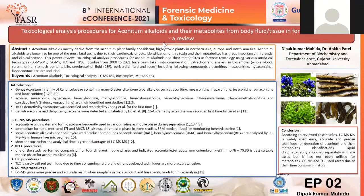Good afternoon to everyone. Here I am presenting a review on a toxicological analysis procedure for aconitum alkaloids and their metabolites from body fluid or tissue in forensic toxicology. Aconitum alkaloids are mostly derived from the aconitum plant family, which is considered one of the most toxic plants due to cardiotoxic effects. Many published works indicate the detection and identification of aconitum alkaloids, and here we present a review of those papers. Case studies published during the years 2000 to 2021 have been taken into consideration.